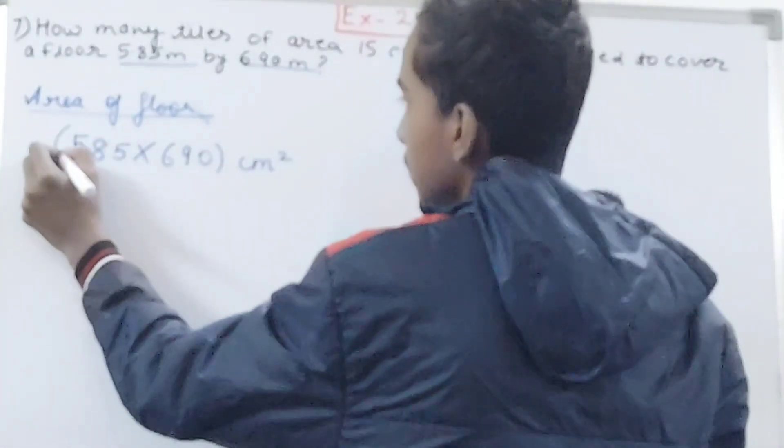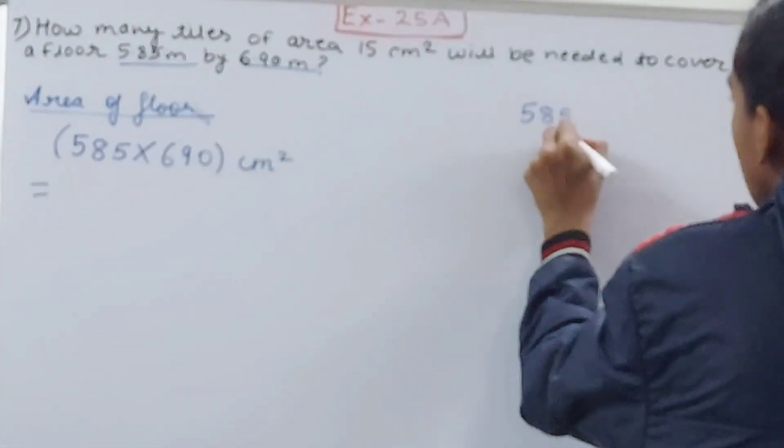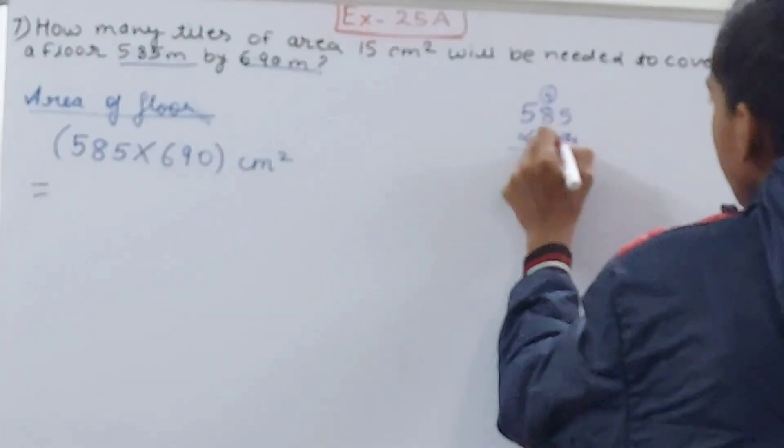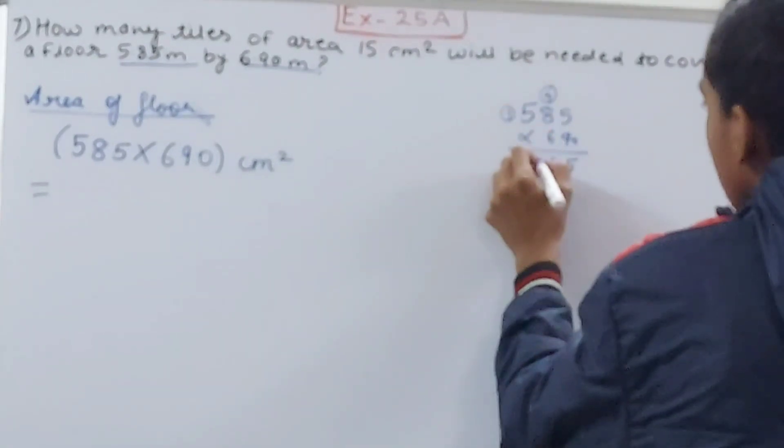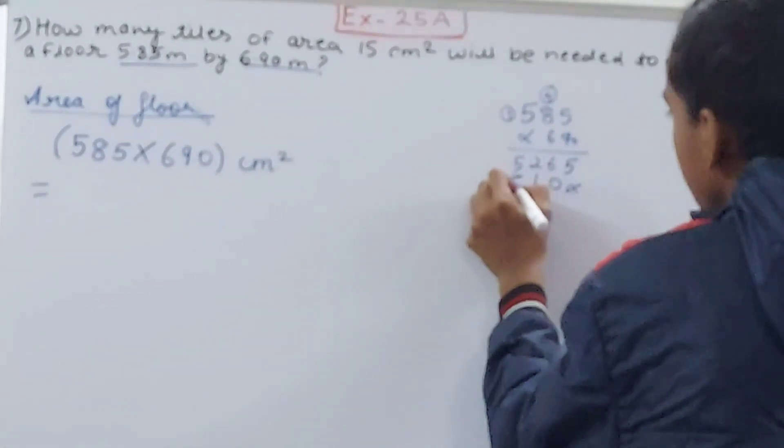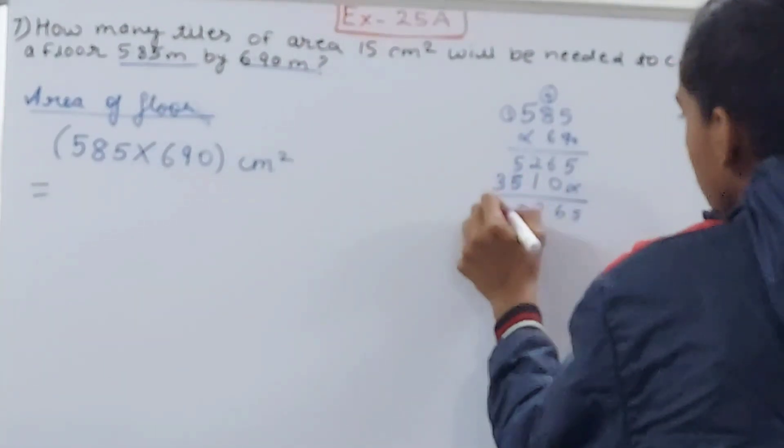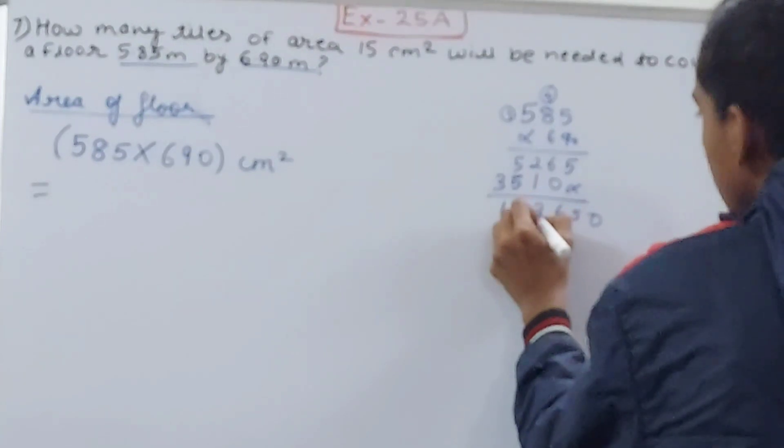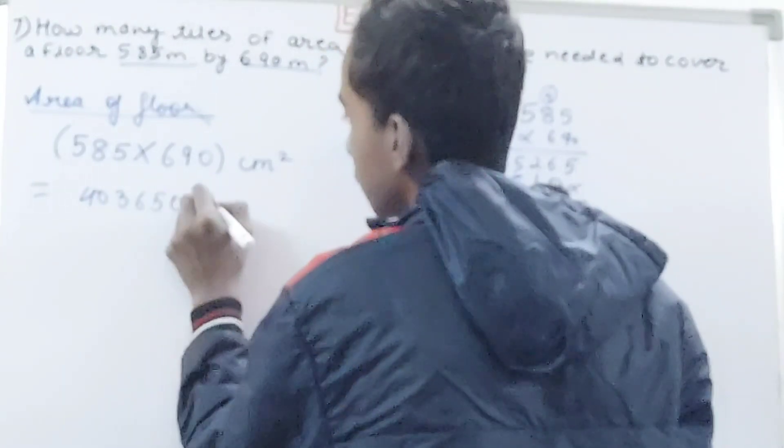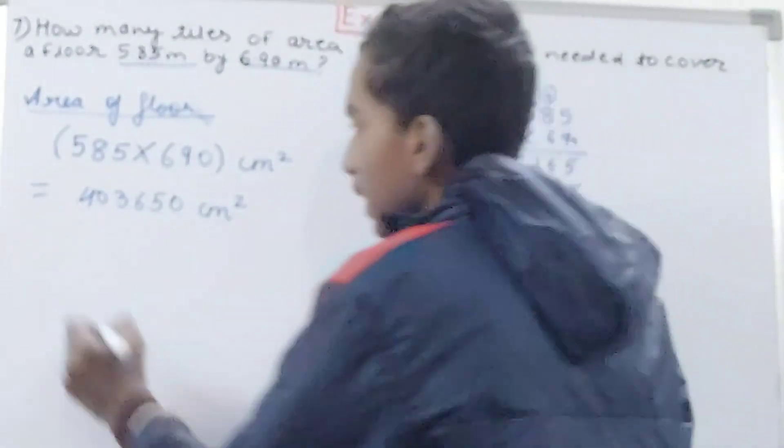Right, solve this. What you will have - let's see. So 585 and 690 over here. Nine times five is forty-five, carry four. [working through the multiplication] ...403,650. 403,650 square centimeters. This is the area of the floor.